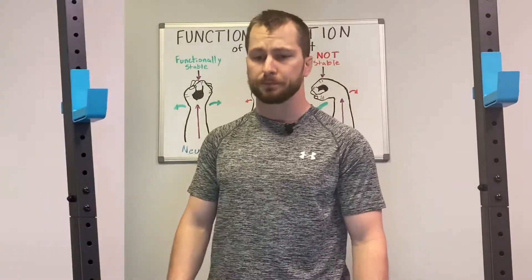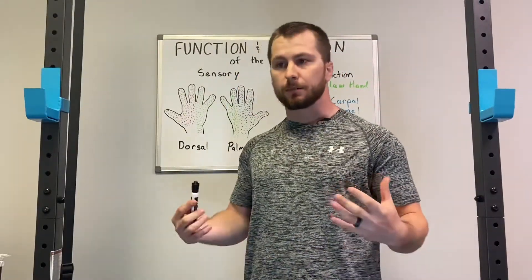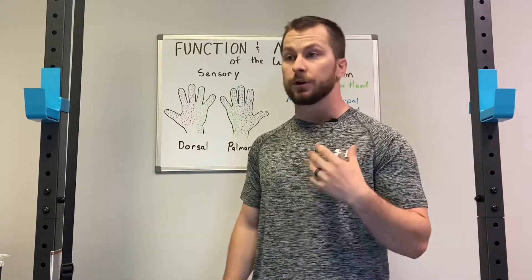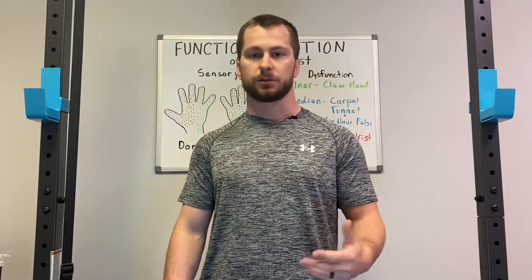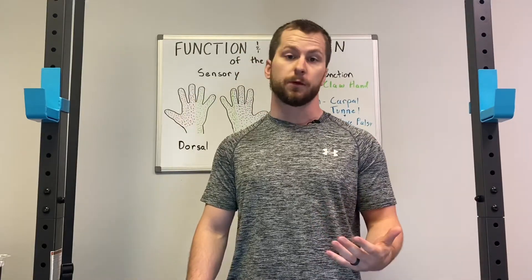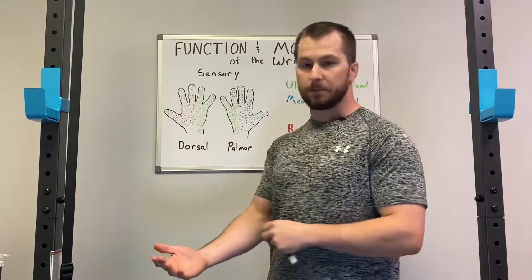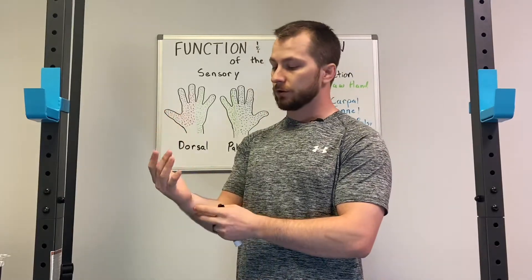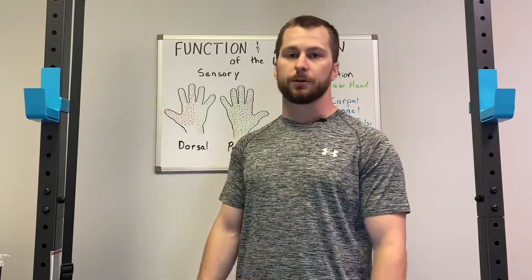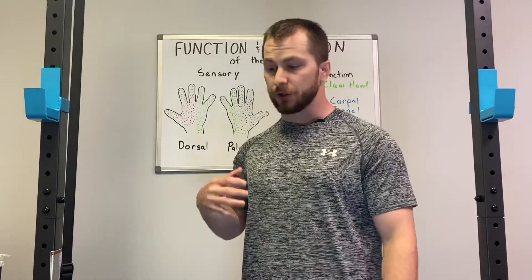As we saw in the last video, we have some pretty important structures running through our wrist in terms of nerves and blood supply. When these structures are compromised, we'll see major dysfunctions in wrist grip strength and ability to move. We have the median nerve running through the carpal tunnel, the ulnar nerve running through the canal of Guyon, and the radial nerve running down the radial side of the wrist.